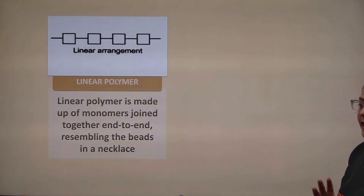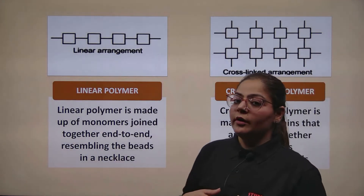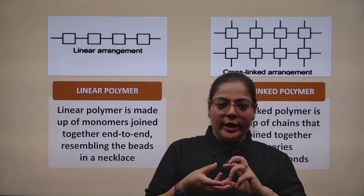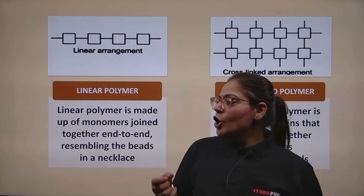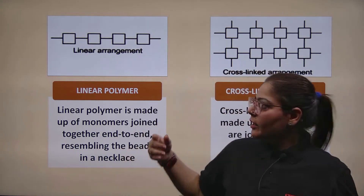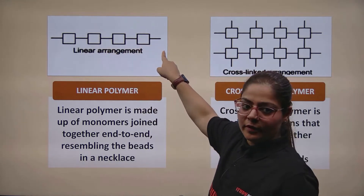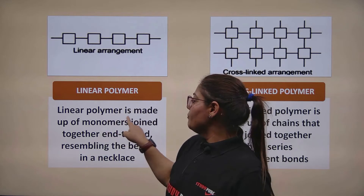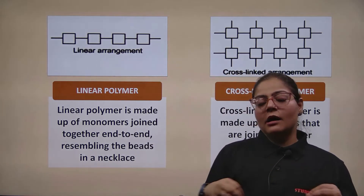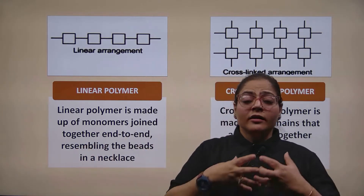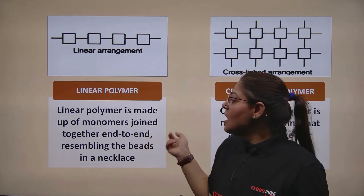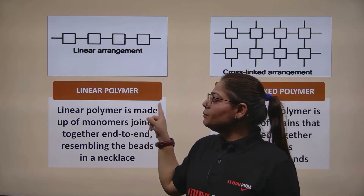Now let's move to the arrangement part. When monomers are joined together, the question is: where and how do you join them? One possibility is a linear arrangement — monomers joined end to end. A linear polymer is made up of monomers joined together end to end, resembling beads in a necklace. Just like beads in a garland, or train bogies joined one after another — those are all linear arrangements. When a polymer forms this way, it is called a linear polymer.